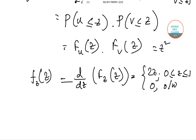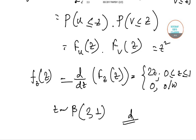We can say that Z follows a Beta distribution with parameters 2 and 1. So our answer is option D, where Z follows a Beta(2, 1) distribution. Thank you for watching the video. Hope this helped you solve your queries on the ISS Statistics paper. For more solutions on ISS optional statistics papers, keep checking our channel and stay tuned. Thank you.